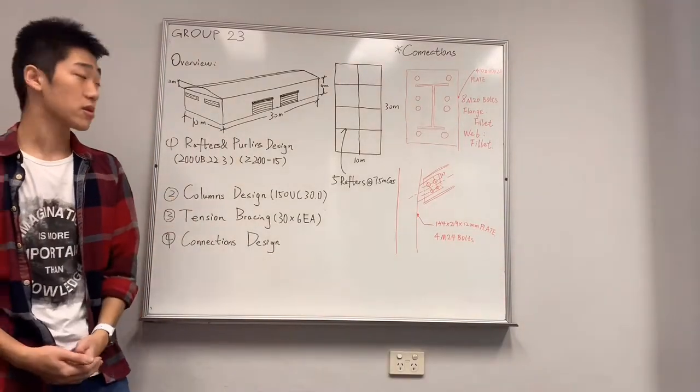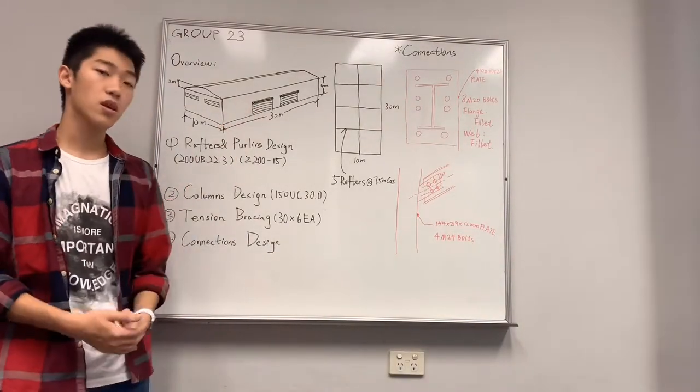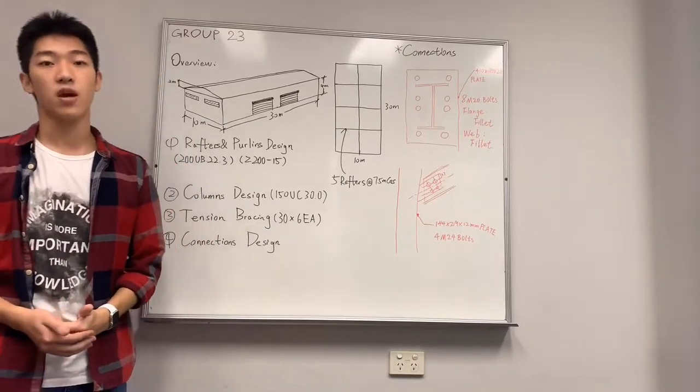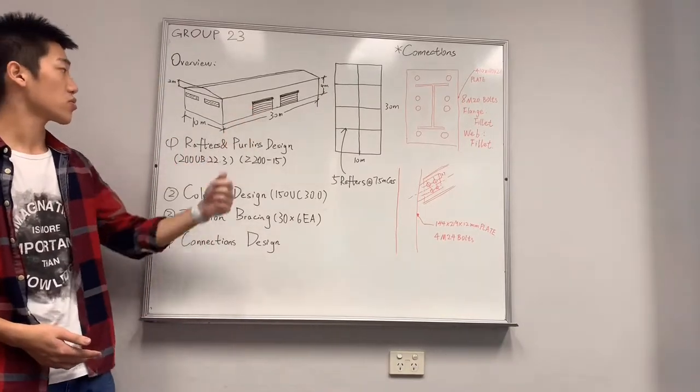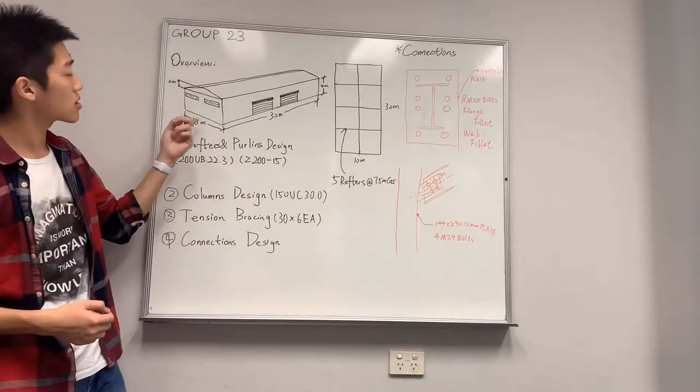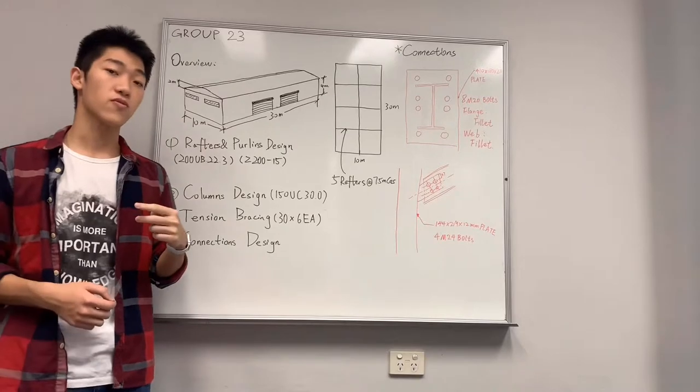This is what we designed. We have the centimeters length and 10 meters width and the average height is 5 meters. On this side we have two doors for car entry and this side we have two windows for the air.